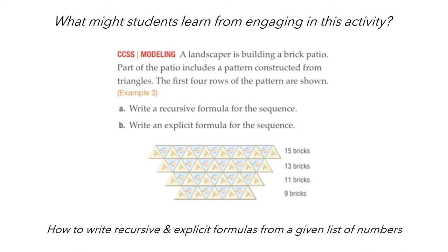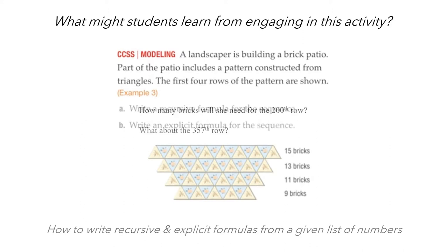Now what if we tweak this problem a bit? Instead of telling students what to do, what if we ask them to figure out how many bricks will be in the 200th and 357th row? There are various ways that students could investigate these questions. For example, they could skip count by two.